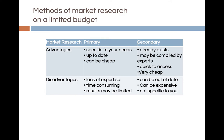Methods of market research on a limited budget — the advantages of primary research: it's specific to your needs, it's up to date, and it says it can be cheap, though I'm not sure about that unless you are simply asking people coming into your shop or standing on the street asking questions. Generally, primary research is not cheap. Secondary research is described as very cheap, so a distinction is made between 'cheap' and 'very cheap' — it certainly is cheaper, even though it can still be expensive.